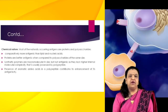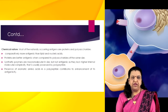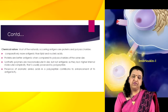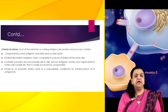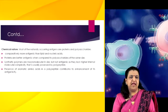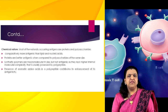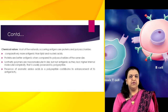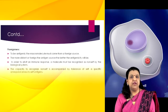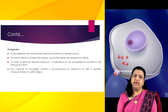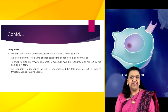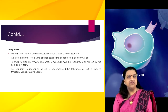In this regard, it is notable that all four levels of protein organization — primary, secondary, tertiary, and quaternary — contribute to the structural complexity of a protein and hence affect immunogenicity. Synthetic polymers are macromolecular in size but not antigenic, as they lack the higher internal molecular complexity usually possessed by polypeptides. Presence of aromatic amino acids in a polypeptide contributes to enhancement of its antigenicity. Foreignness also plays a very important role governing antigenicity. To be antigenic, a macromolecule must come from a foreign source. Antigens from related species are less antigenic than those from unrelated species.